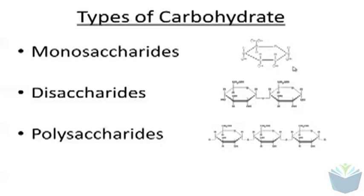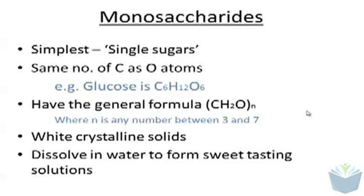Here you have three pictures showing the different types. Monosaccharides are sometimes known as simple sugars. You can sometimes see the formula for these simple sugars — for instance, glucose is C6H12O6. The carbon and oxygen are in the same proportion, and there is double the amount of hydrogen. If you think about water, water has two hydrogens to a single oxygen, and it is the same in carbohydrates. They are usually white crystalline solids that dissolve in water and produce sweet-tasting solutions, which is why they sweeten liquids.